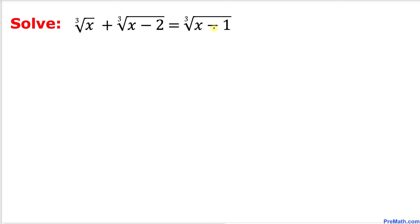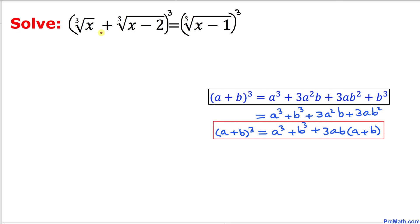The very first thing we are going to do is take the cube of both sides — power 3 on the left side and power 3 on the right side as well. Now we are going to expand the left hand side by using the formula (a + b)³.